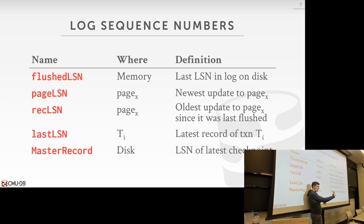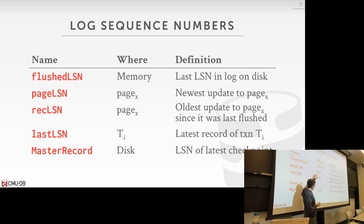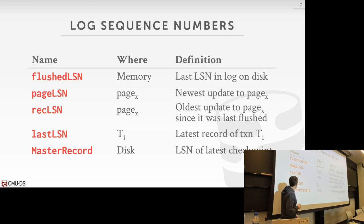When I bring the page into memory, the first transaction that modifies it, I add that log sequence number as the rec LSN, and then no matter how many times I keep modifying it while it's in memory, the rec LSN is always the same, whereas the page LSN will increase. I'm going to write this data also out to disk — it will just go in the header as extra information to make sure we're doing the right things during recovery. Every transaction, we're going to keep track of the last LSN — that's the last log record that it added.